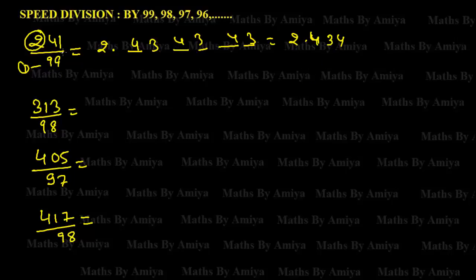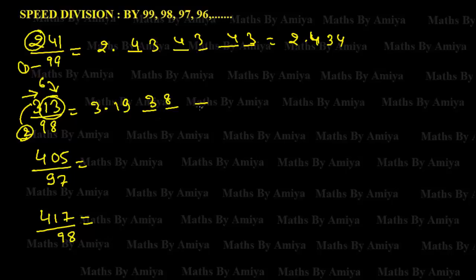For 313 divided by 98: the gap is 2, extra digit is 3. 2 × 3 = 6, add 13: 6 + 13 = 19. So it is 3.19... Gap is 2, so 19 × 2 = 38, then 38 × 2 = 76. The first three digits of 313 divided by 98 are approximately 3.193.